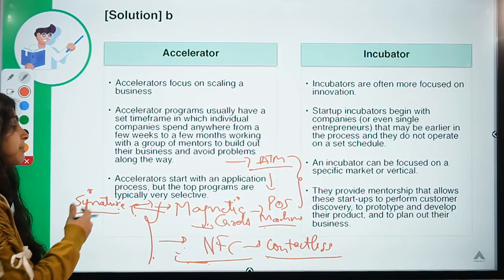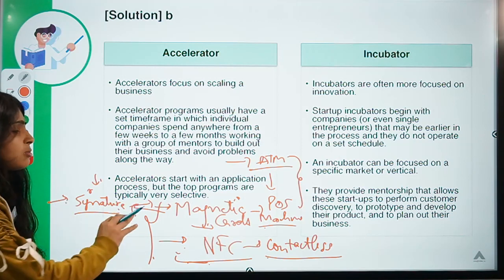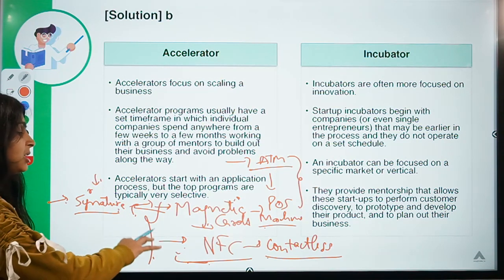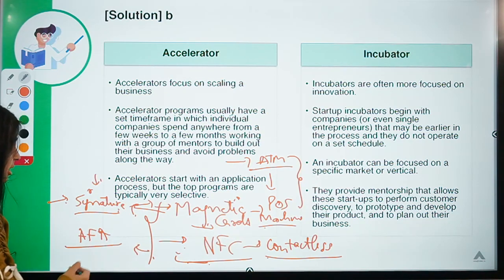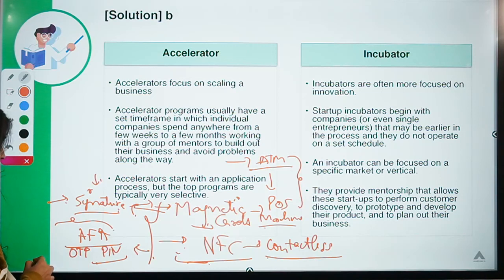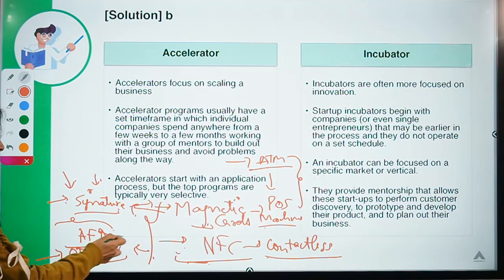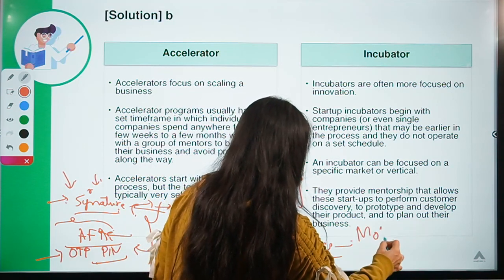Merchants often do not even check signatures properly, making it easy to replicate them. In NFC transactions, there is an additional layer of authentication known as AFA — Additional Factor of Authentication, which we discussed in a previous session. This can be in the form of an OTP sent to a connected mobile number, or a PIN, which is not as easy to replicate as a signature. For larger NFC transactions, additional factor of authentication is required.